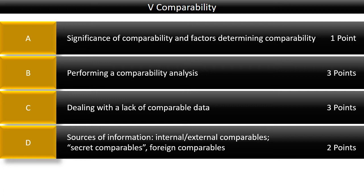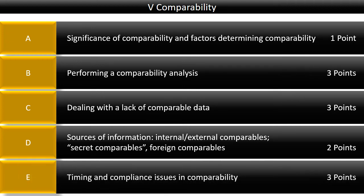Even if the government uses secret comparables, it should put forward the arguments against which the taxpayer can object. Then we'll talk about foreign comparables. There is a tendency for countries to prefer national comparables, but there's no reason, when all other circumstances are equal — such as equal markets and equal spending power — why foreign comparables should not be acceptable as well. And then we'll deal with timing and compliance issues, which we briefly discussed when talking about the meaning of the word contemporaneous as described in the UN Practical Manual on Transfer Pricing.